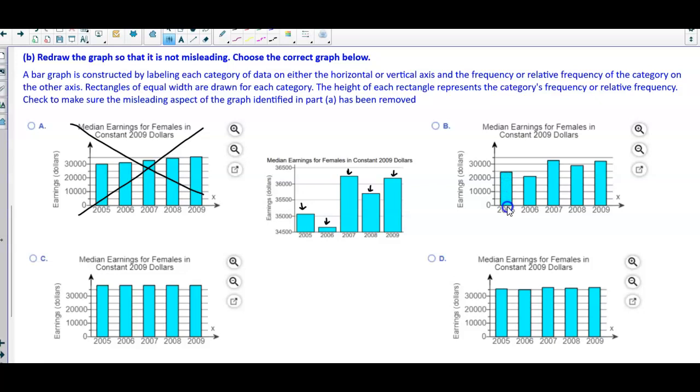If we look at graph B, this one goes all the way up to 25,000 for 2005. Therefore, that's not where this is located, so we're going to have to eliminate B.